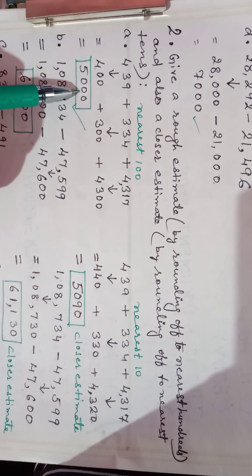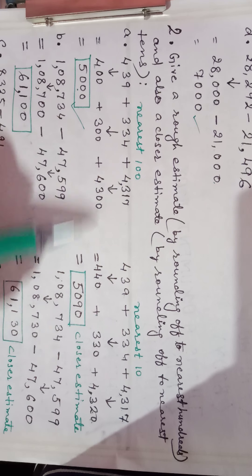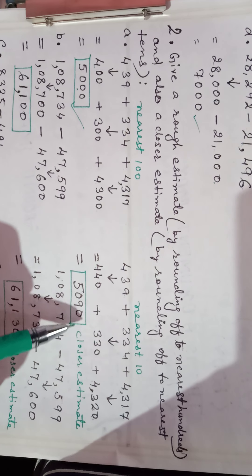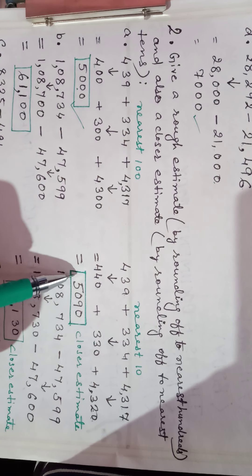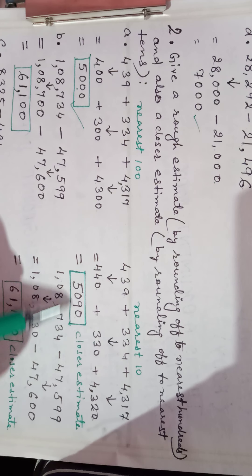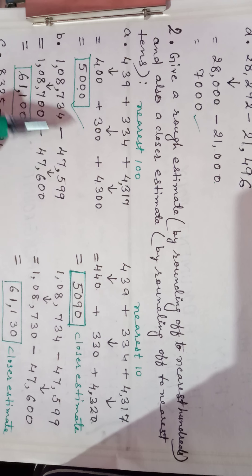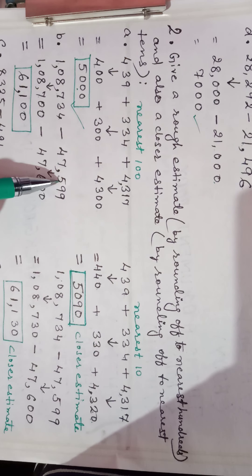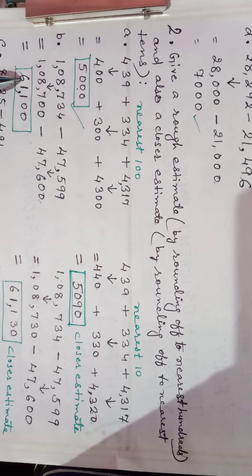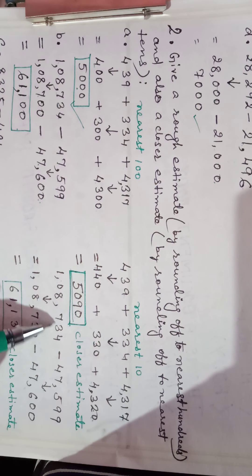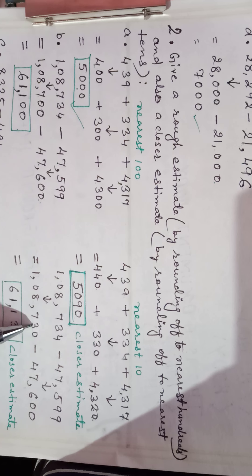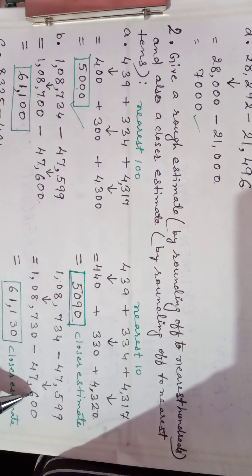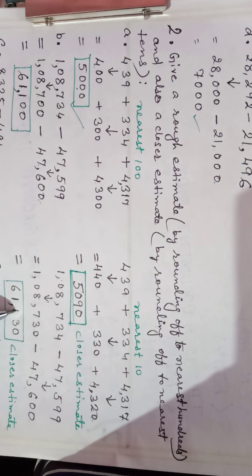We see that the estimate rounded to the nearest 10 is closer to the actual value than the estimate rounded to the nearest 100. This is because rounding to the nearest 10 gives a closer estimate. For question 2b: 1,08,734 rounded to the nearest 100 is 1,08,700, and 47,599 rounded to the nearest 100 is 47,600. After subtraction the answer is 61,100. To the nearest 10: 734 becomes 730 and 599 becomes 600, giving 61,130.